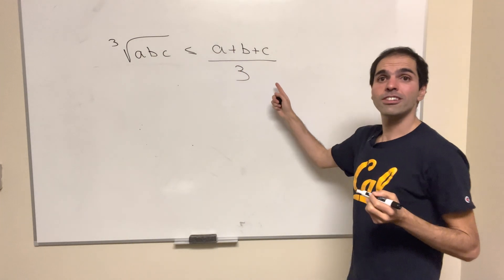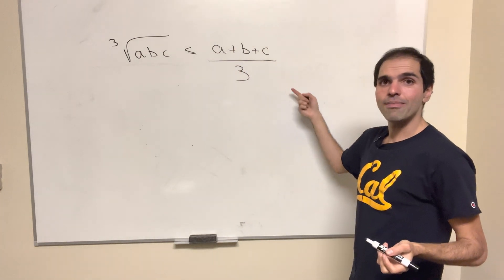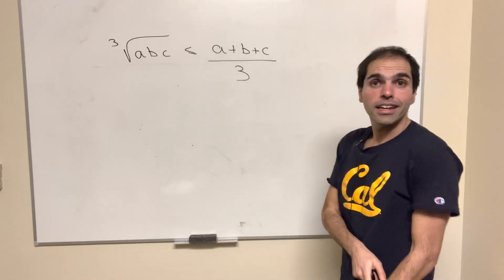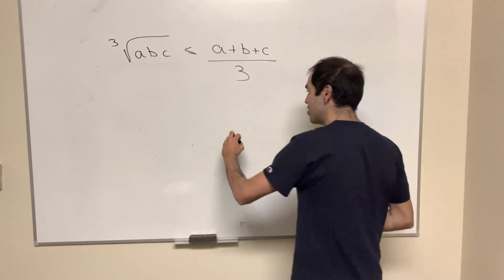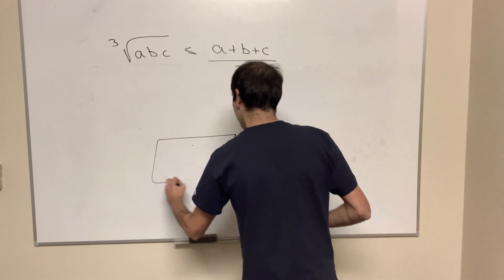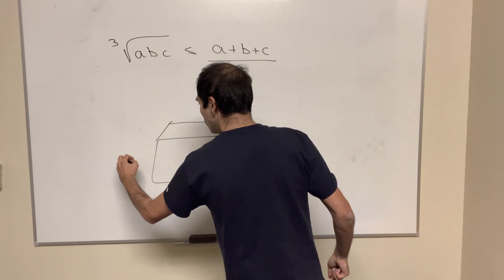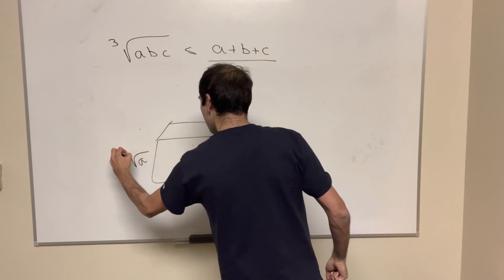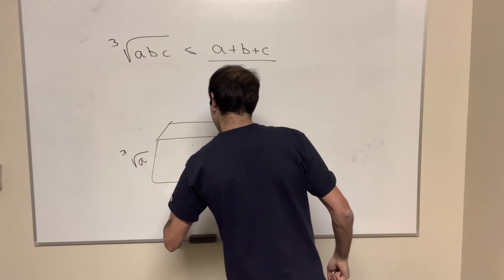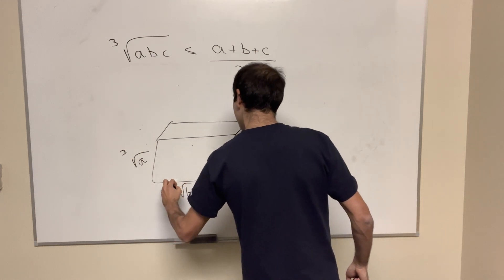The geometric mean is less than or equal to the arithmetic mean, and at least my hunch would be to now consider the following prism with sides cube root of a, cube root of b, and cube root of c.